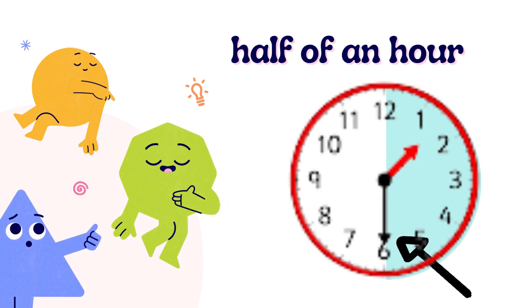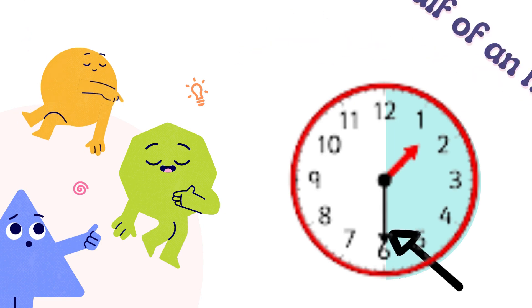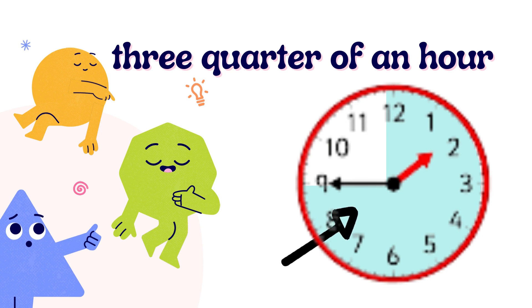Now the shaded portion has enlarged into half — half of the clock face. The minute hand is pointing to number 6, and we have the shaded portion half of the clock face. So we will say half of an hour. Next, when the minute hand moves to number 9, we have the shaded portion three-quarter of the clock face. This indicates three-quarter of an hour.